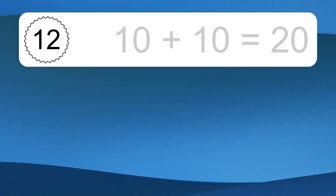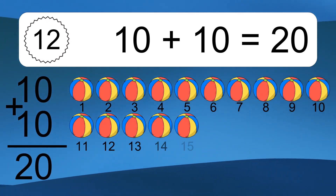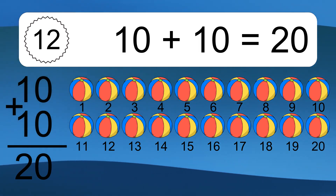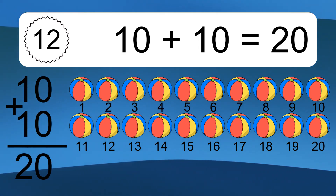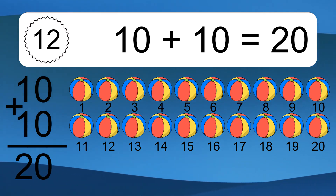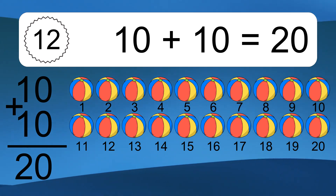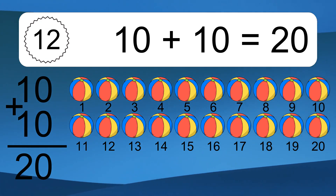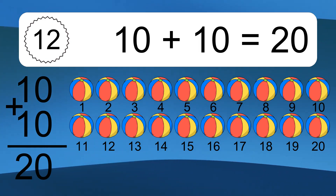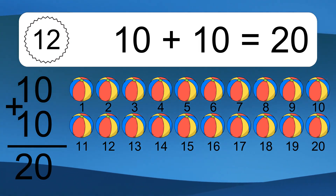10 plus 10 equals what? 10 plus 10 equals 20. Let's count it. 1, 2, 3, 4, 5, 6, 7, 8, 9, 10, 11, 12, 13, 14, 15, 16, 17, 18, 19, 20.